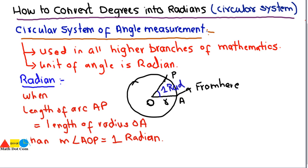This is the concept of radian. A radian is defined as the angle subtended at the center of a circle by an arc whose length is equal to the radius of the circle. In this case, angle AOP is equal to one radian.